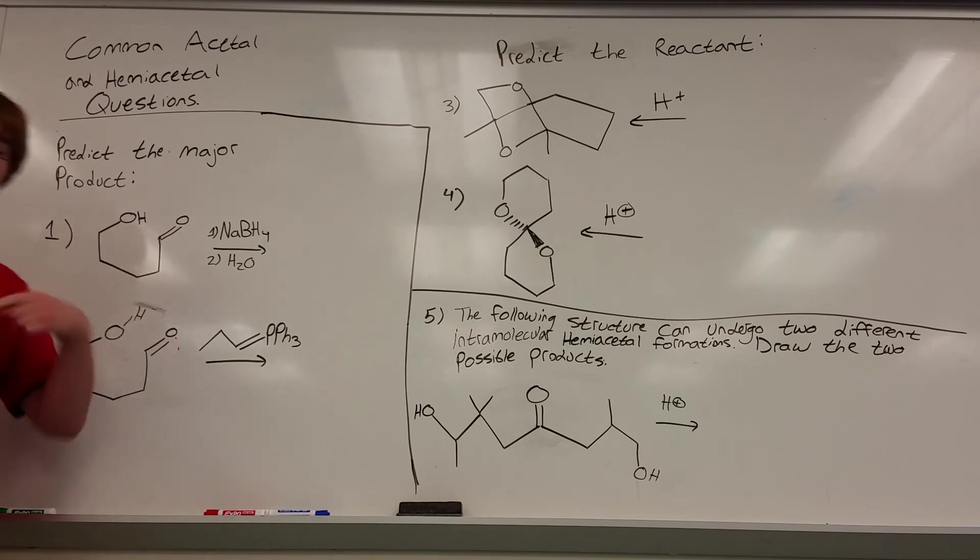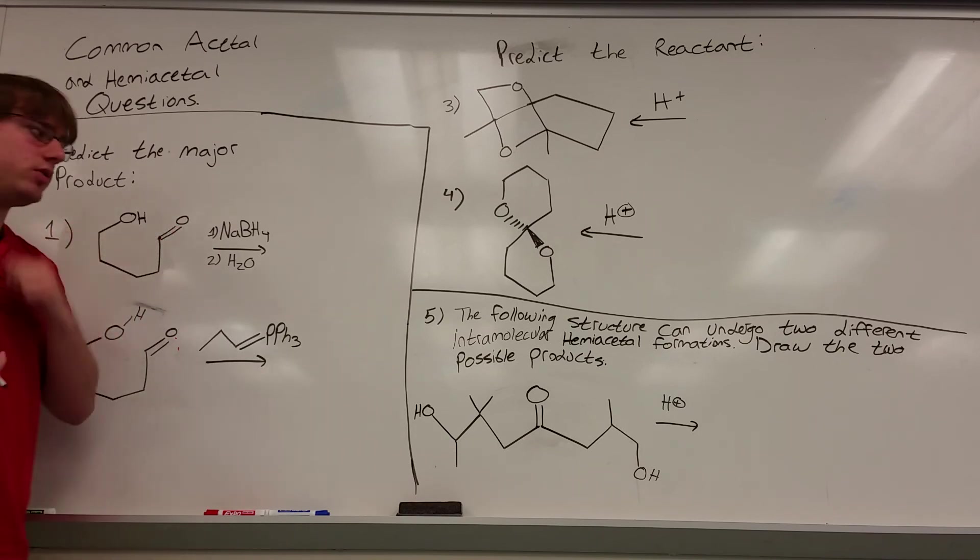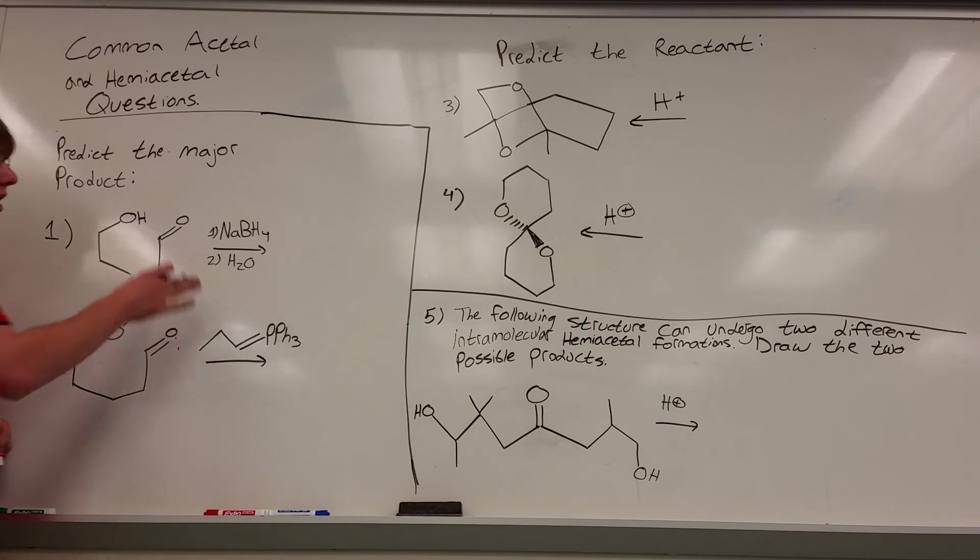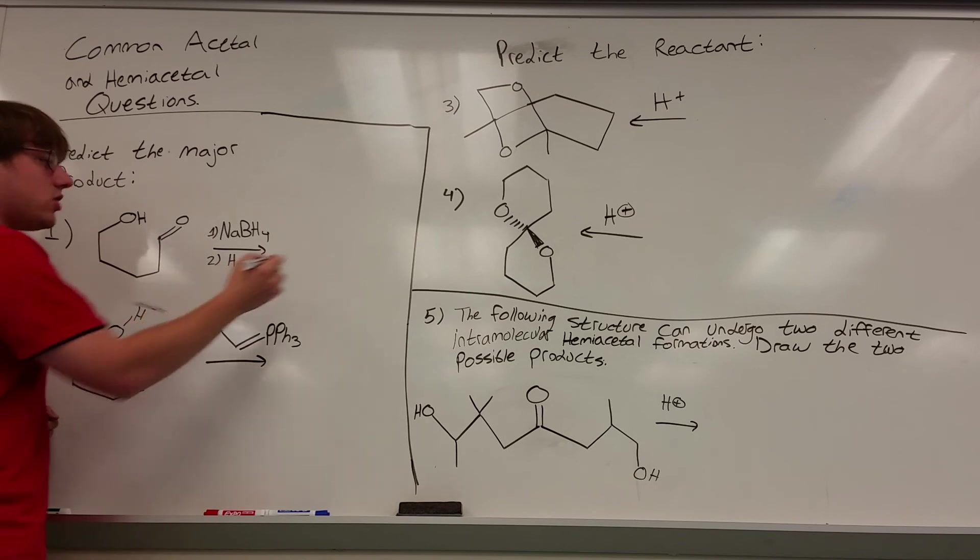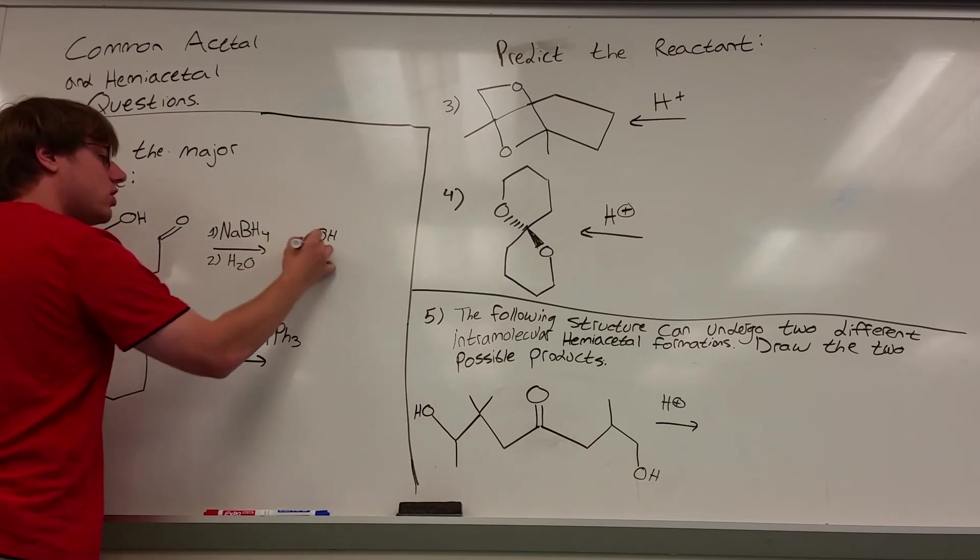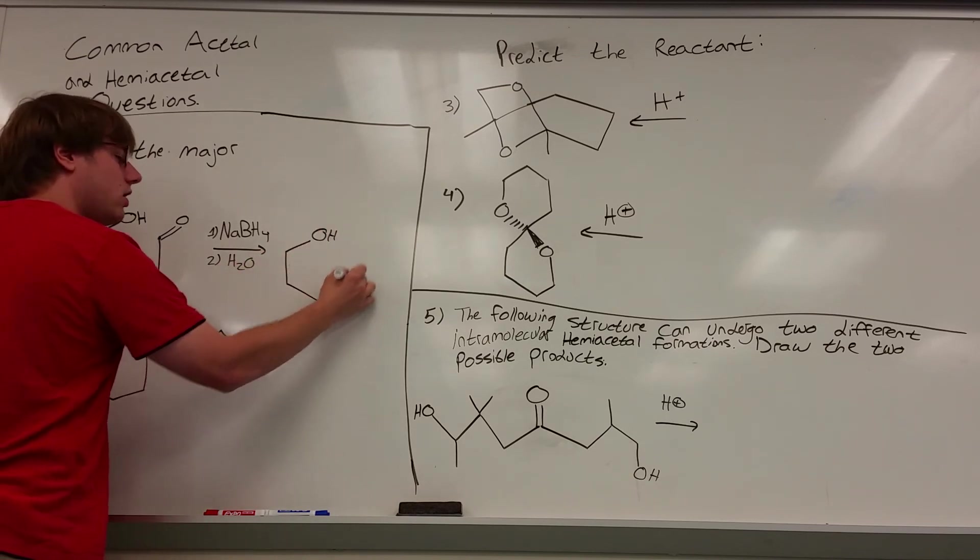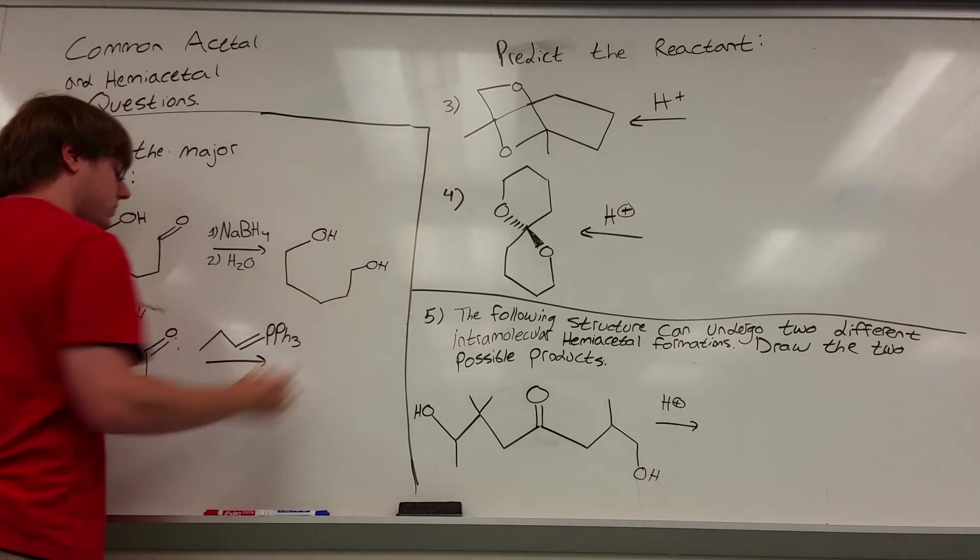So NABH4, as we know it, cannot react with anything but double bond O's. And this is how we can turn a hemiacetal into its double bond O form. Then that's just a matter of, well, what does NABH4 do to an aldehyde? It turns it into an OH. So the answer to this question is just that double bond O getting turned into an OH.